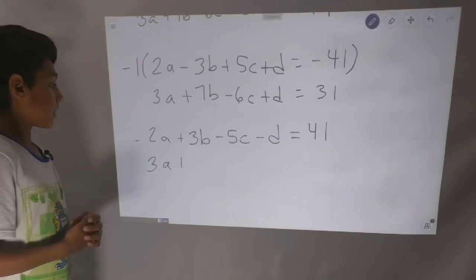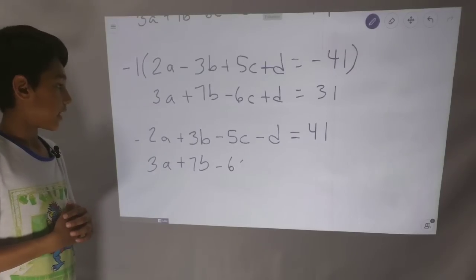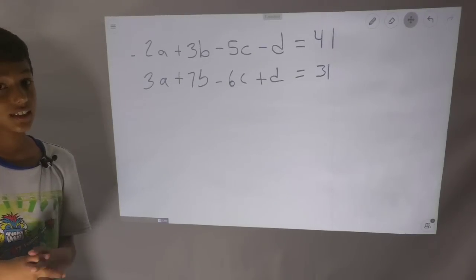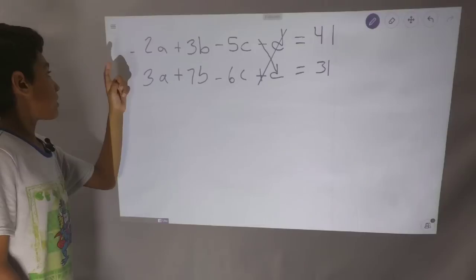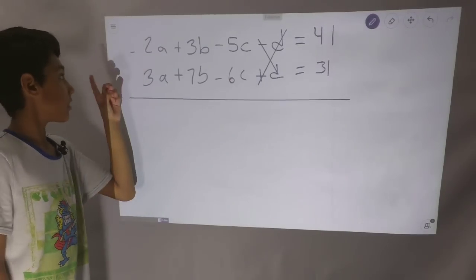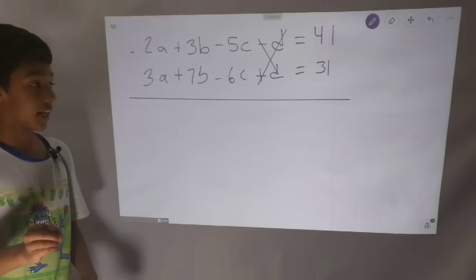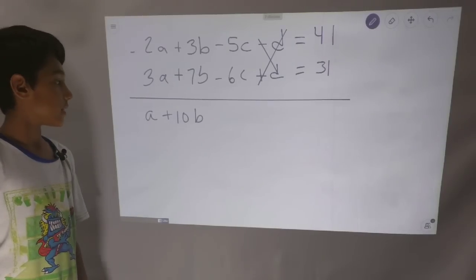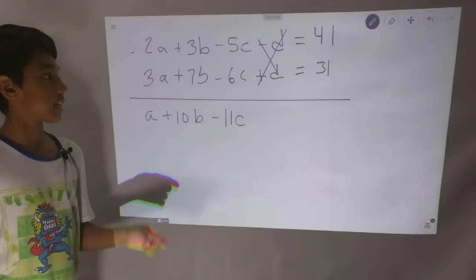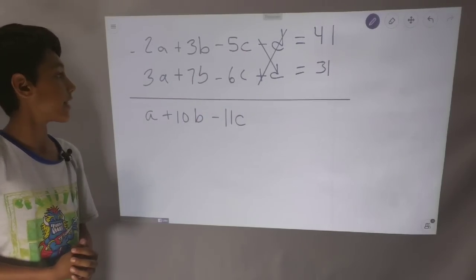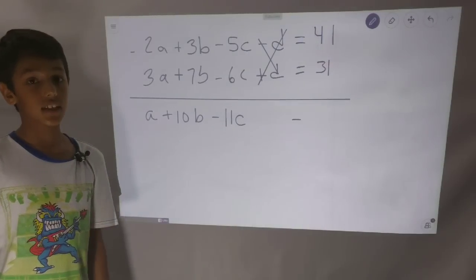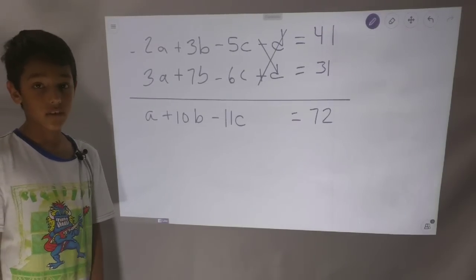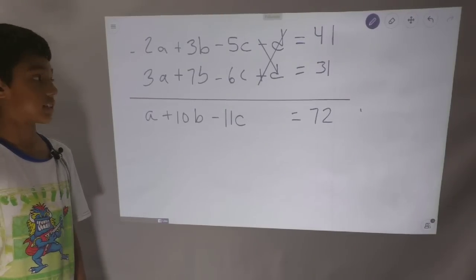Now we have 3A plus 7B minus 6C plus D equals 31. Negative D plus D equals 0. So let's combine these two equations: negative 2A plus 3A is just A, so A plus 10B minus 11C, and negative D plus D is 0. That equals 72, since 41 plus 31 is 72. We'll label that E1, equation 1.